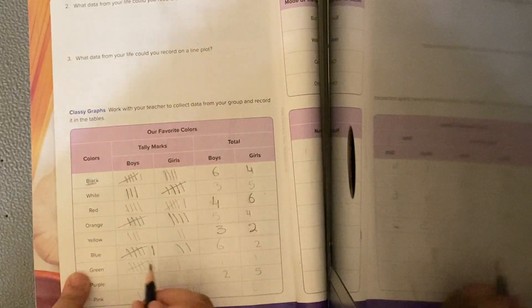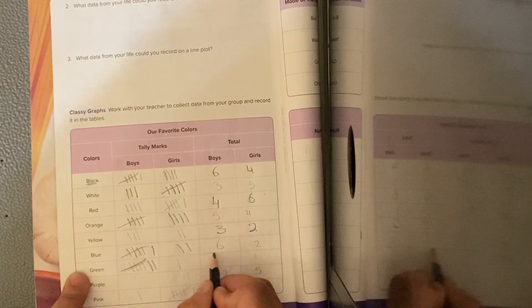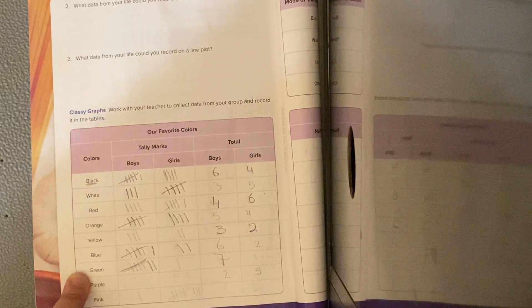Green. There are 1, 2, 3, 4, 5, 6, 7. So there are 7. How many for the girls? 1.